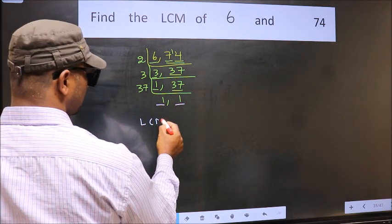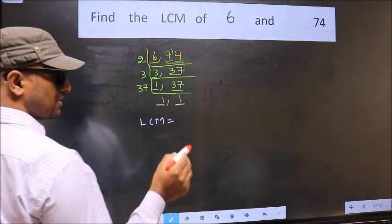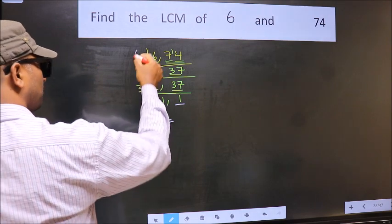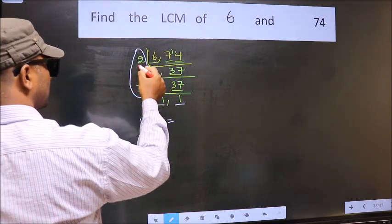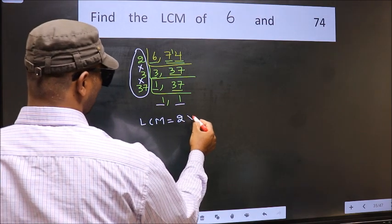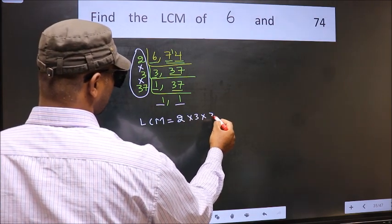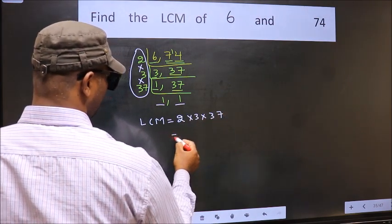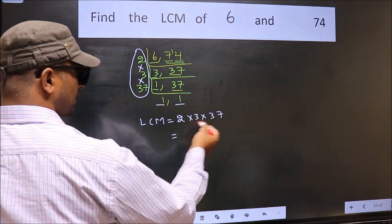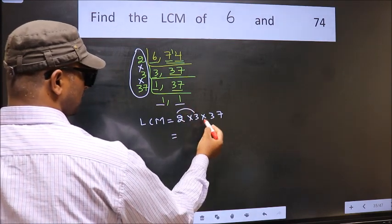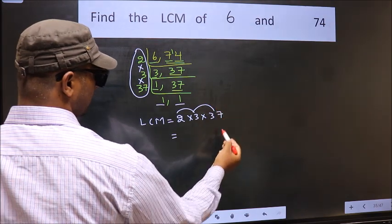So our LCM is the product of these numbers, that is 2 into 3 into 37. So let us multiply these numbers 2 into 3 is 6, into 37.